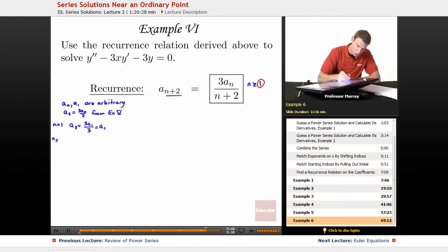N equals 2 gives me A4 is equal to 3A2 over N plus 2 for, oops, that's not N sub 2, that's N equals 2. 3A2 over 4, but A2 was 3A0 over 2, so that's 3 times 3, I'll write that as 3 squared times A0 over 2 times 4.